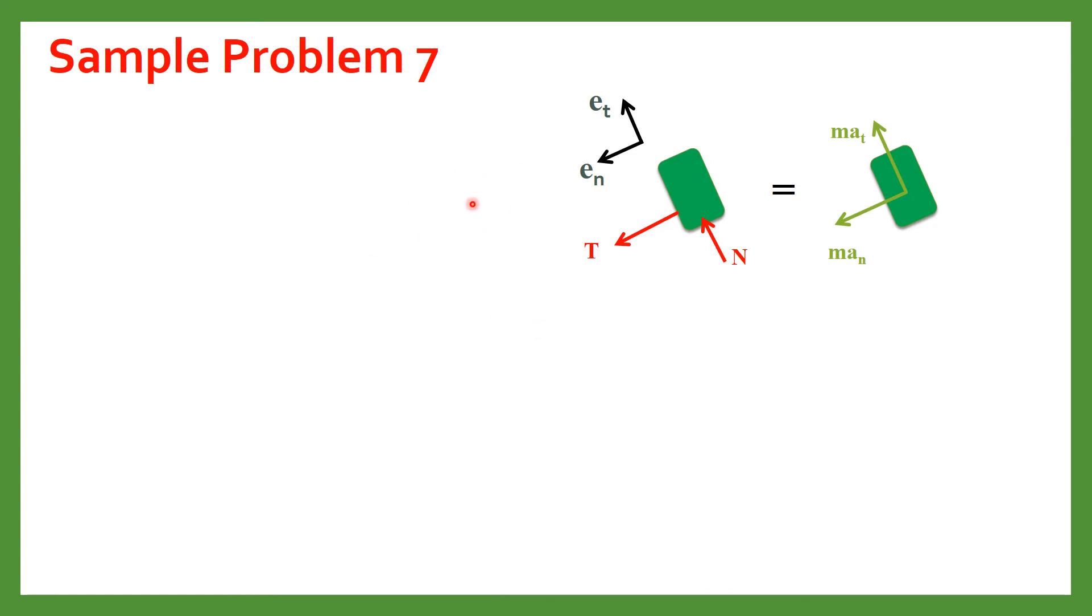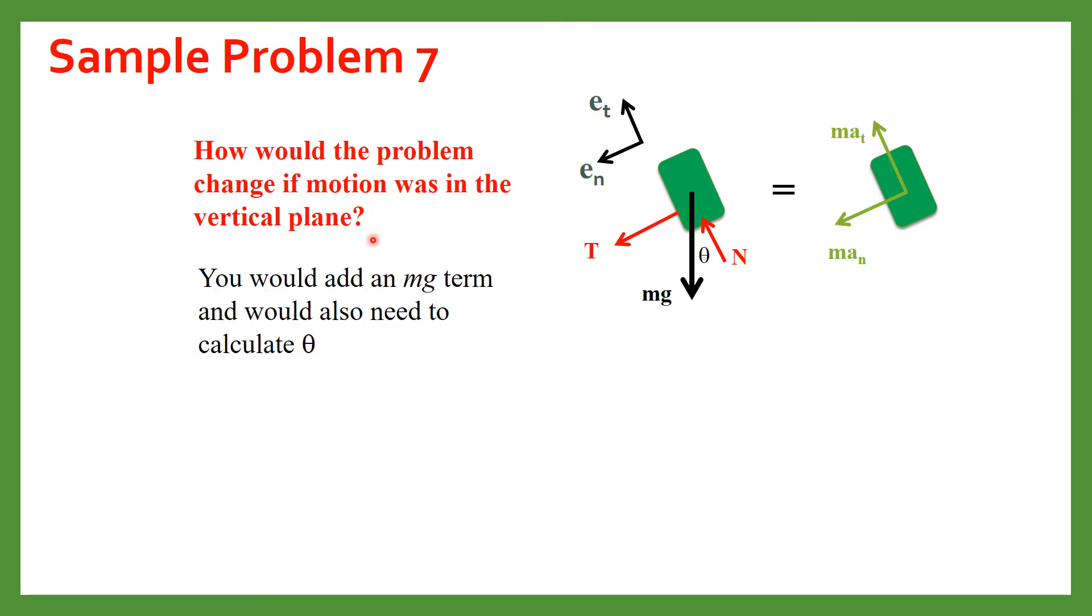Now let us consider the situation if the motion of this block is in vertical plane. So in that case you need to add mg term because in the vertical direction this force will also act and in that case because this force will act in vertical direction and it will make an angle theta with normal. So you also need to calculate the theta.